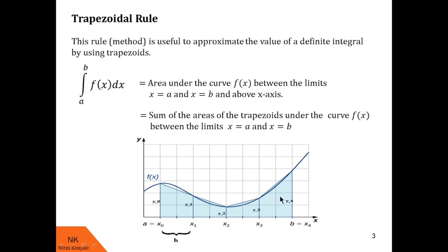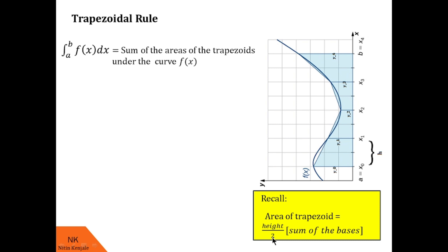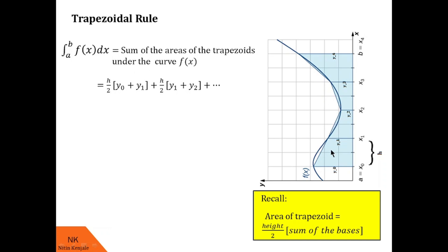Now let us calculate the sum of the areas of these trapezoids. We will recall the area of a trapezoid formula: it is given by height divided by 2, into the sum of the bases. Here we clearly see that height is h. Then the area of the first trapezoid is h/2 into y1 plus y0. Similarly, the area of the second trapezoid will be h/2 into y2 plus y1, and so on. If we partition this area into n partitions, then this area can be given as the sum of the areas of n trapezoids — that is h/2 into y0 plus y1, plus h/2 into y1 plus y2, and so on.